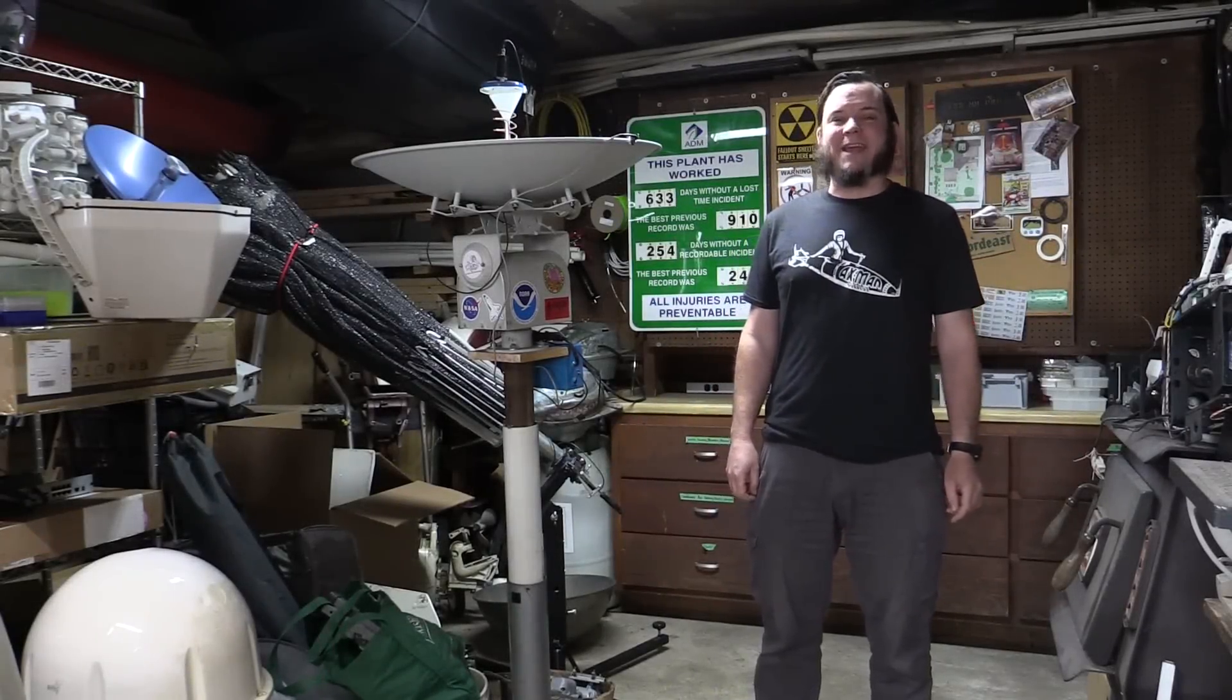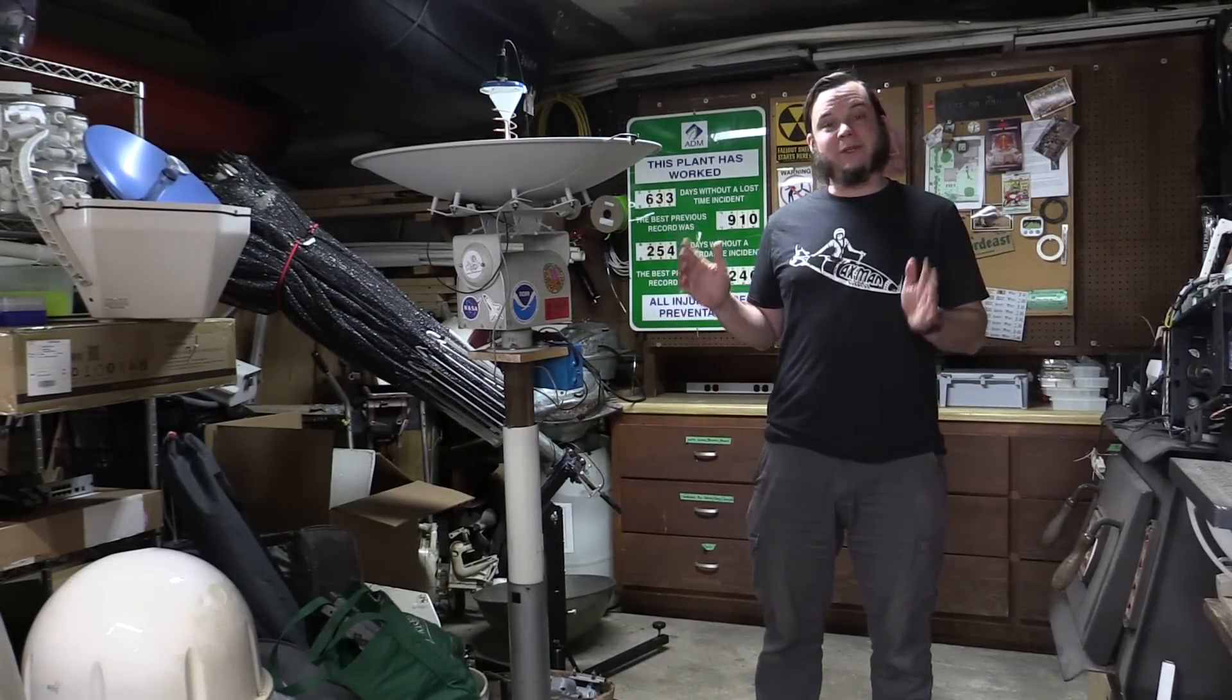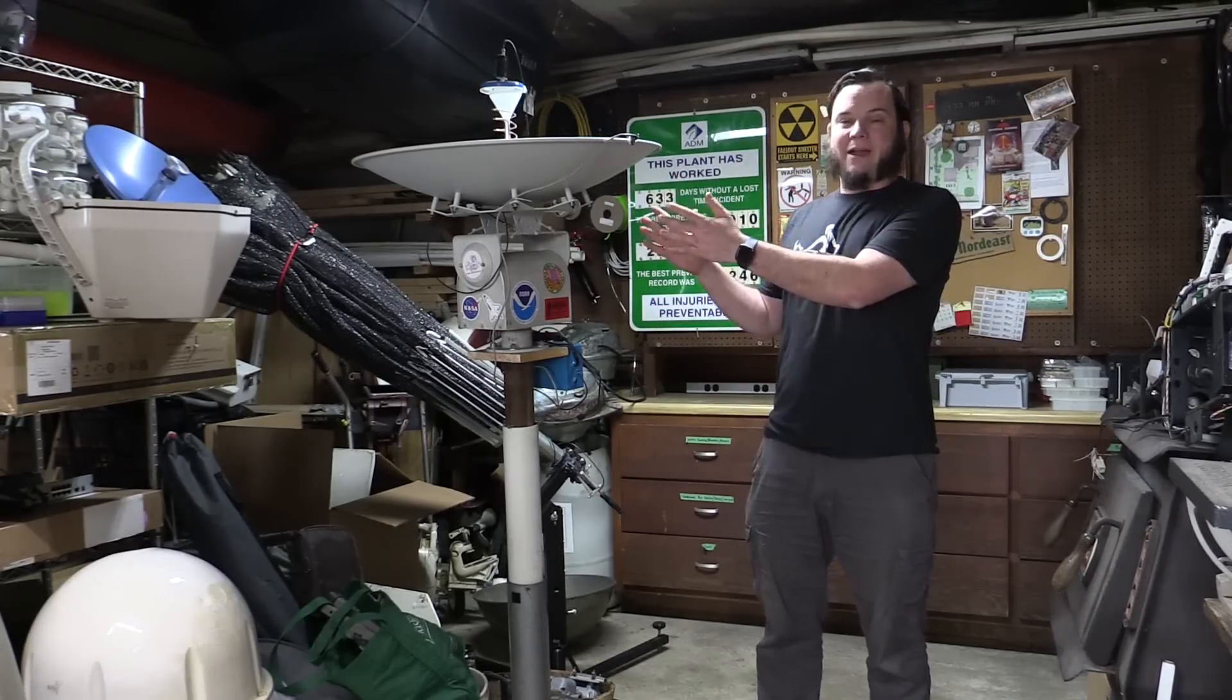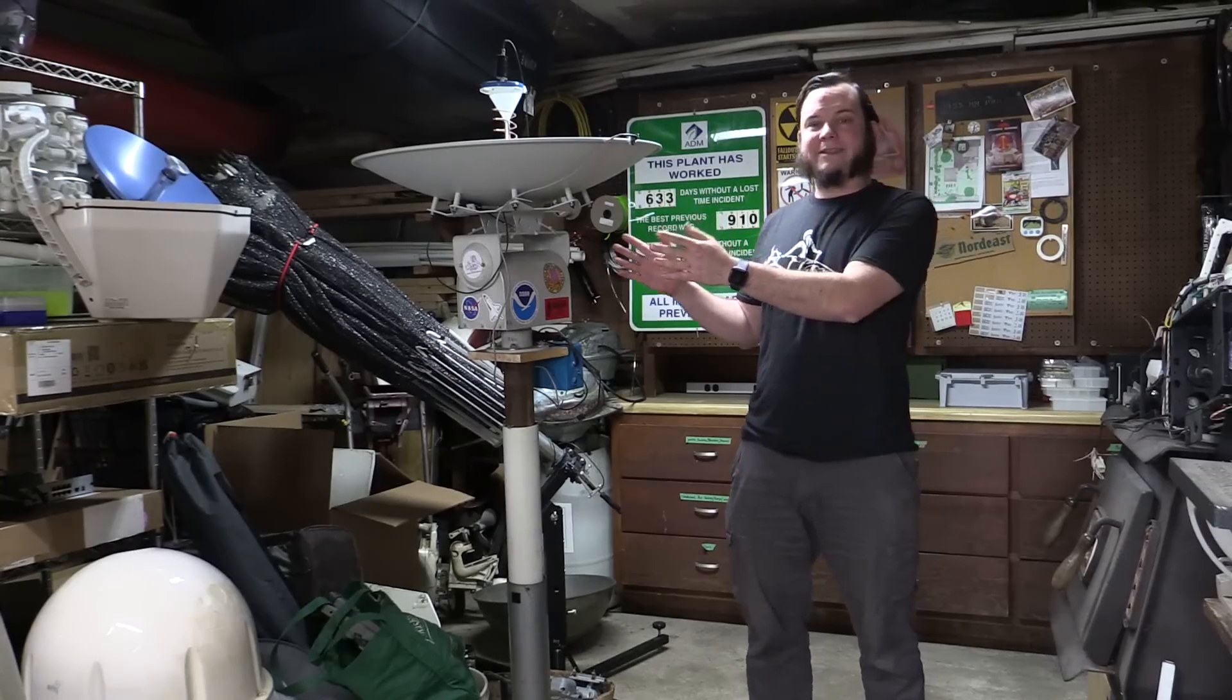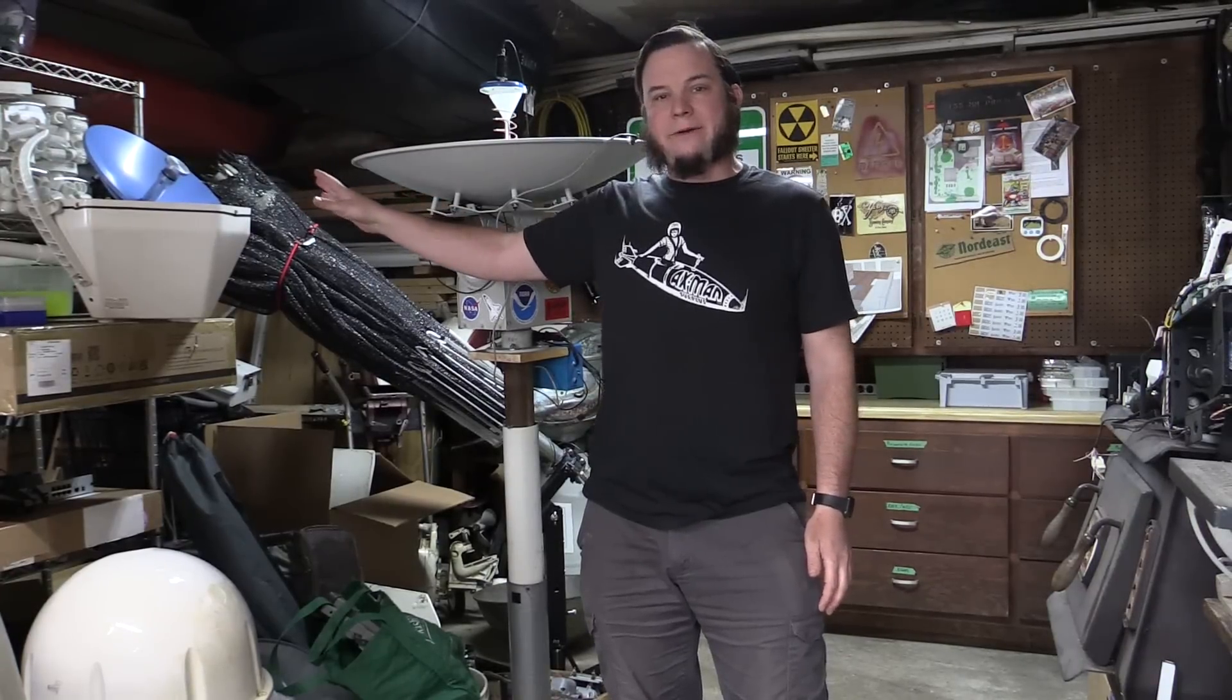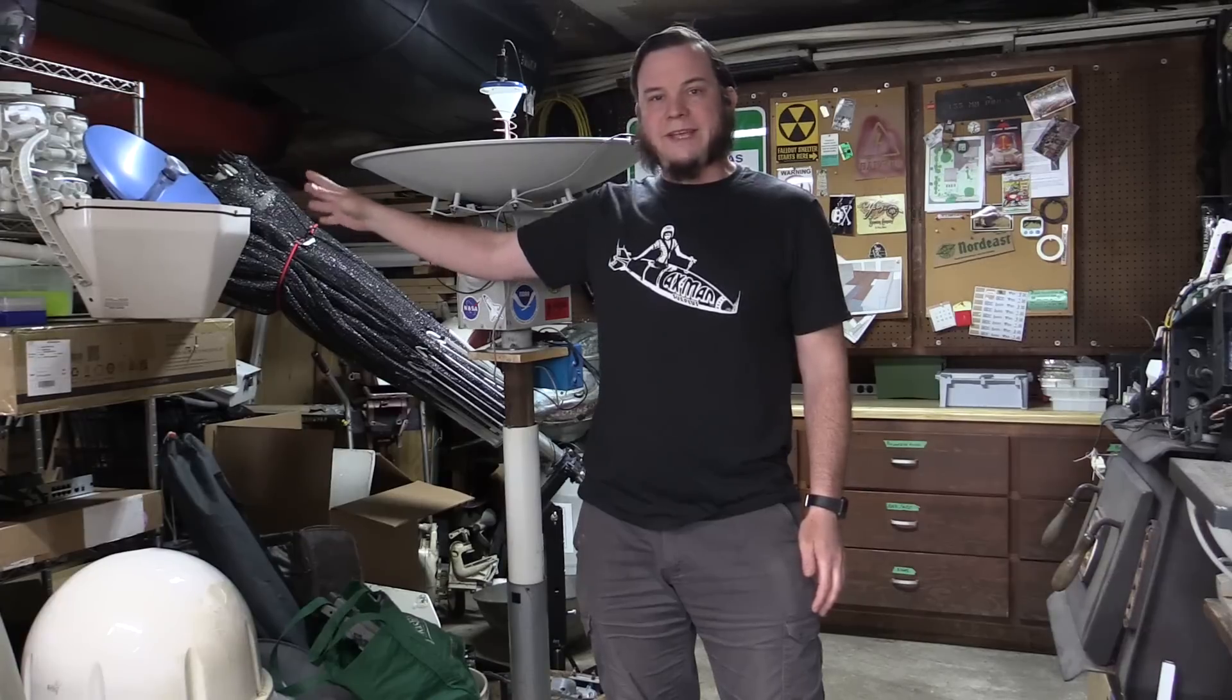Hello and welcome back to the Save It For Parts channel. Today I'm combining two of my prior projects, the medium-sized L-band satellite tracking device and this little miniature radio telescope that I made out of an RV or portable satellite dish.